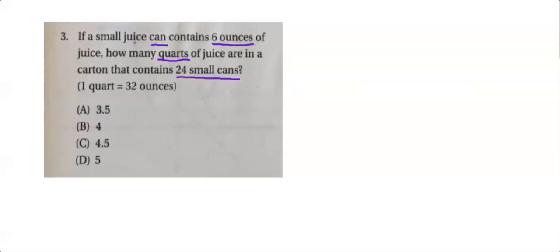Okay, so that means if it's 6 ounces per can and there's 24 cans, doing a unit analysis. This is like 24 over 1 so the cans cancel and we're left with 144 ounces. We want to know how many quarts that is.